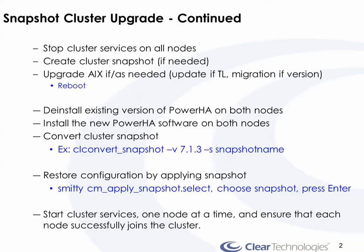If you need to upgrade AIX, go ahead and do so and reboot. With a snapshot migration, you actually de-install the previous version of HA and then reinstall the new version. After you install the new version, you convert the snapshot using a command where minus V is the version your snapshot is in and minus S is the name of the snapshot itself.